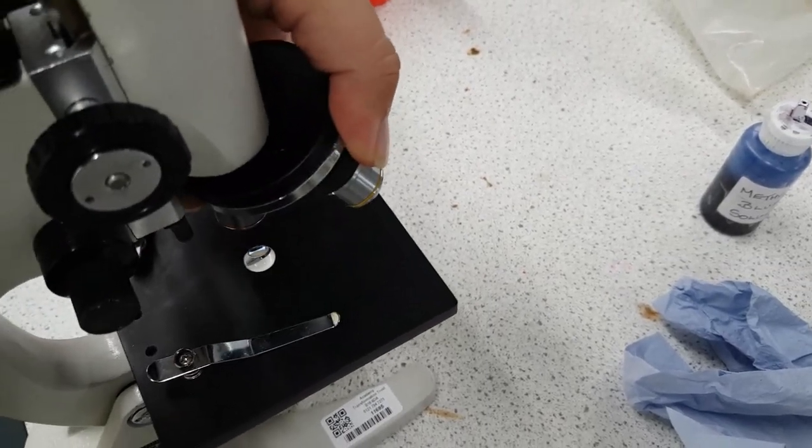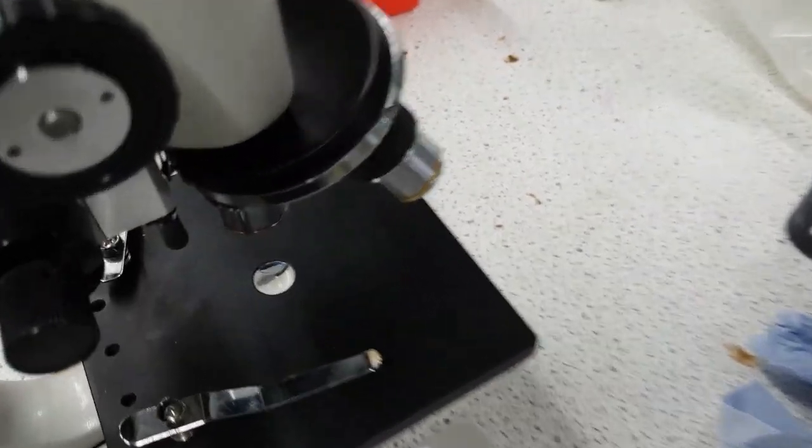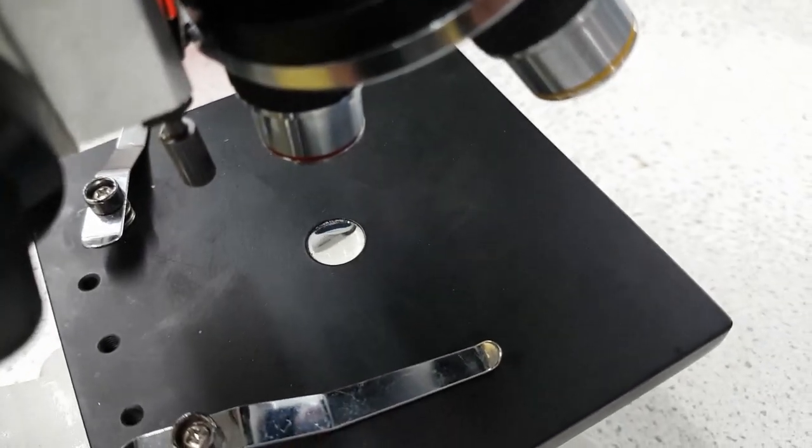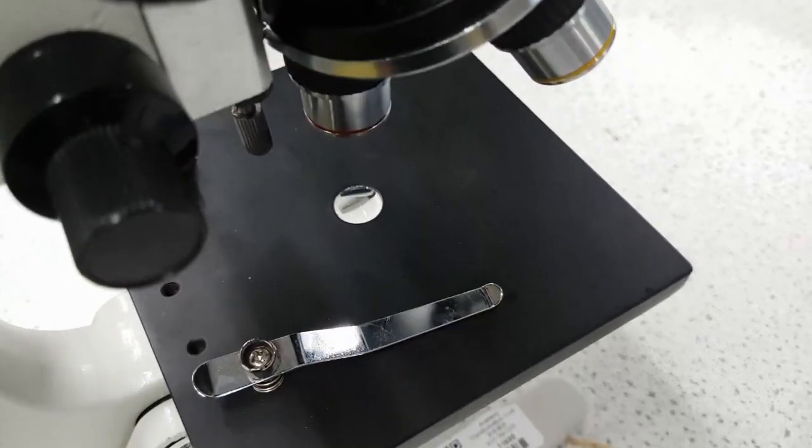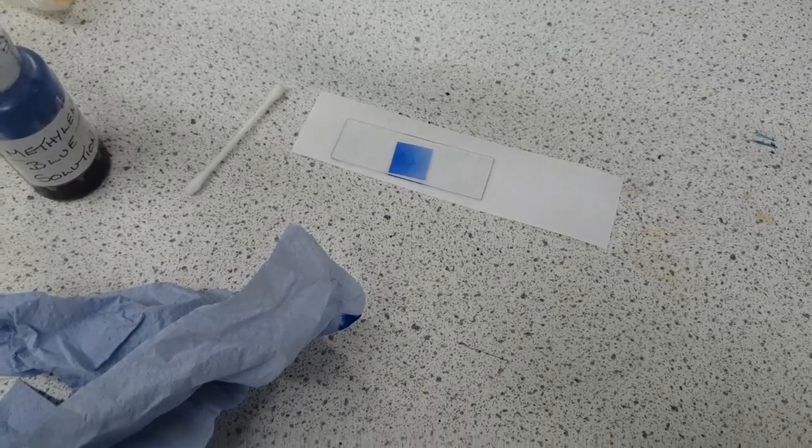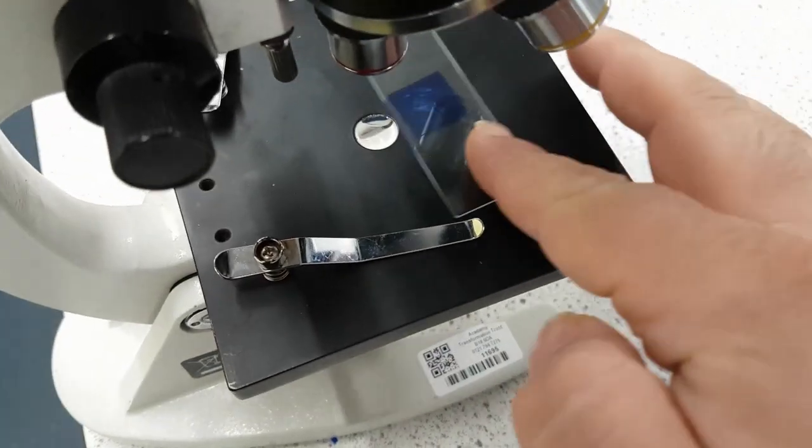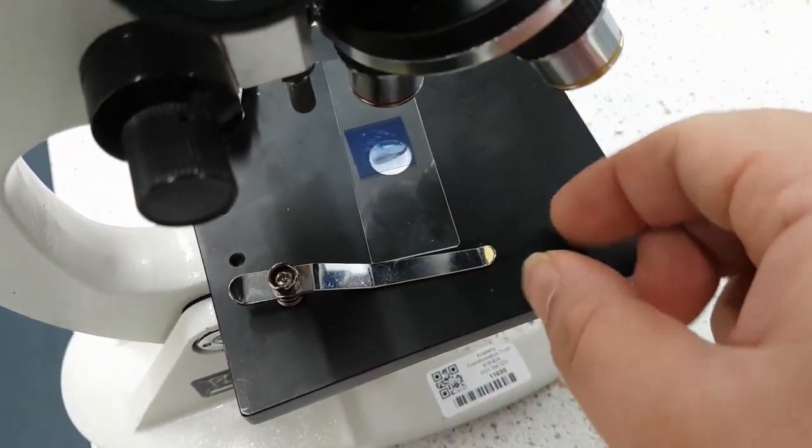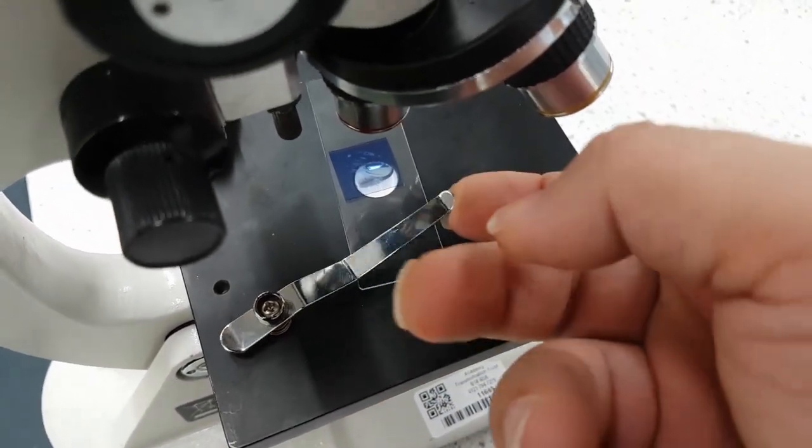And it's clicked in at the lowest magnification one so that's the red objective lens. Then what you do quite simply is you take your slide and you place it onto the stage and you can secure it with these here.